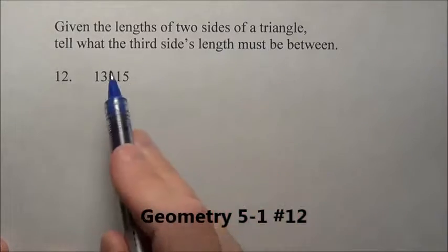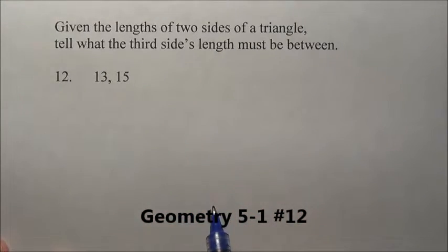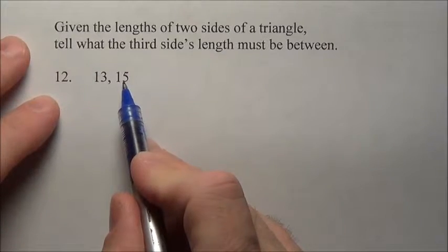Problem 12: Given the lengths of two sides of a triangle, tell what the third side's length must be between. We have 13 and 15.